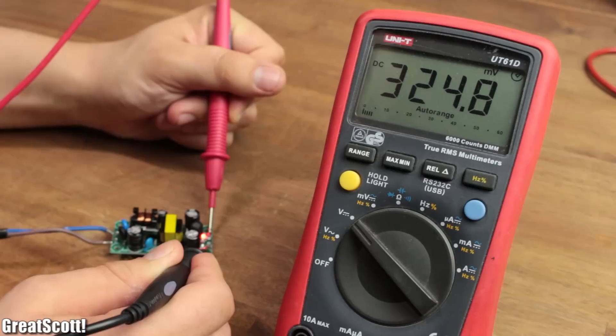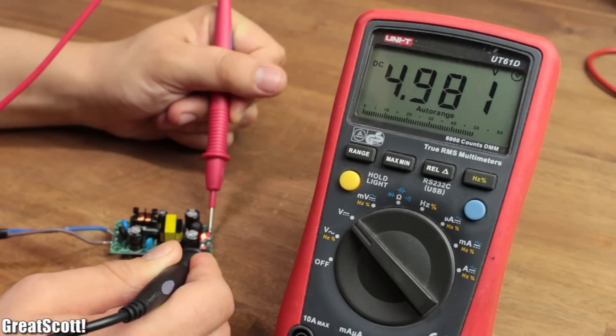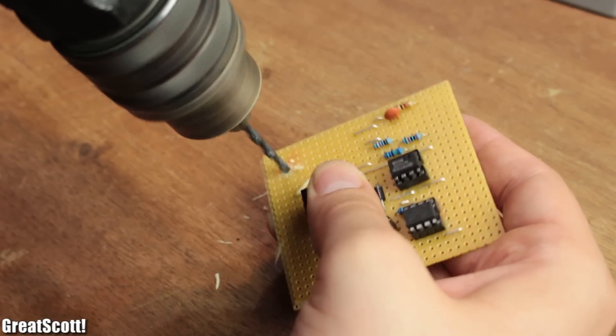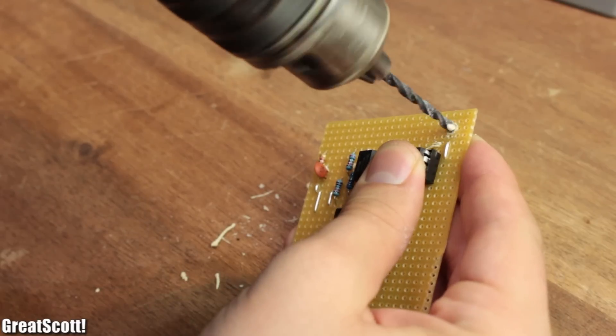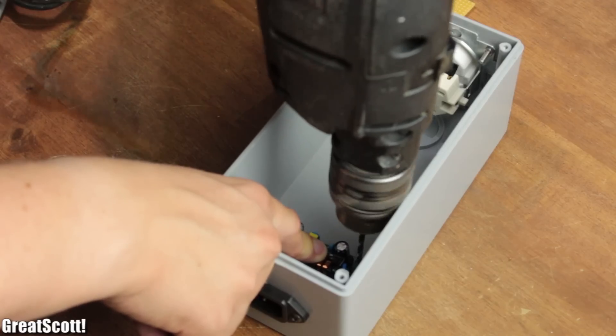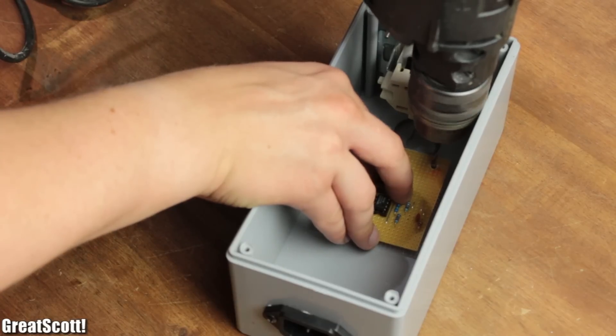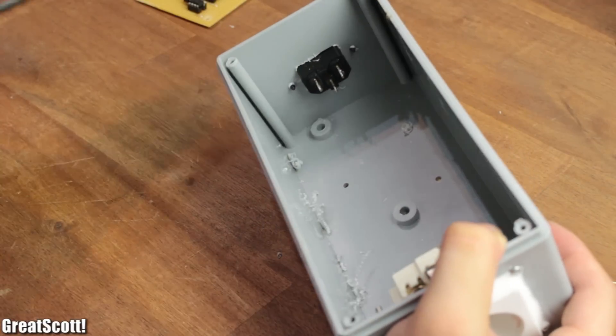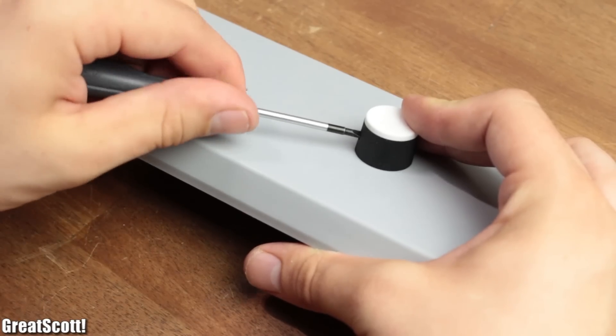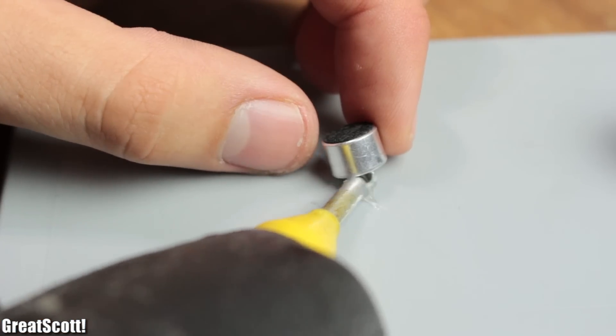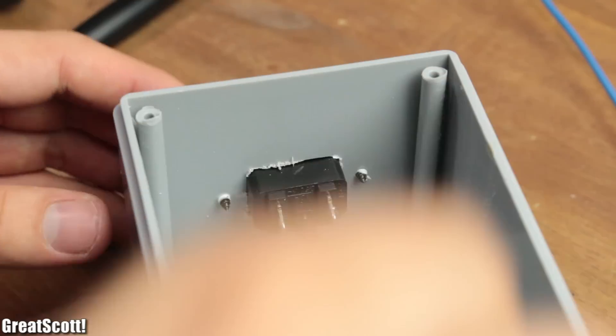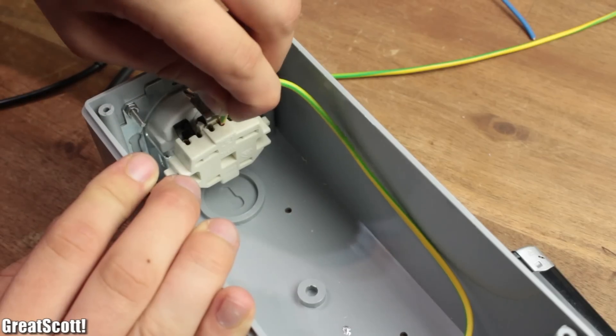But since we cannot power our circuits with 230 volts, we need an additional power supply which can deliver us 5 volts. And before I start the wiring, I drilled 2 holes in the PCB and 4 holes in the bottom of my enclosure to secure the boards later on inside the case.